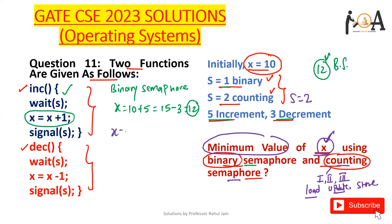The value of x is initially 10. In the first function, I load x for the counting semaphore — so the semaphore value becomes 1. Then I switch to the decrement function and load x there as well, bringing the semaphore value to 0. Because two threads are available, we can switch between functions at any point. Now both the increment and decrement functions have loaded x as 10.